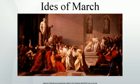The Ides of March is a day on the Roman calendar that corresponds to March 15. It was marked by several religious observances, and became notorious as the date of the assassination of Julius Caesar in 44 BC. The death of Caesar made the Ides of March a turning point in Roman history, as one of the events that marked the transition from the Roman Republic to the Roman Empire.